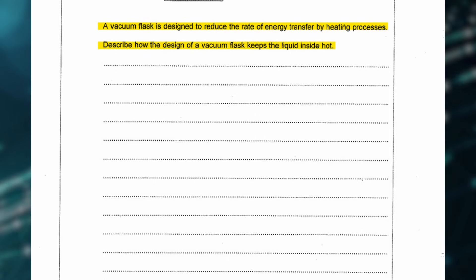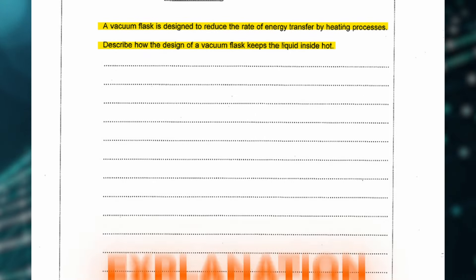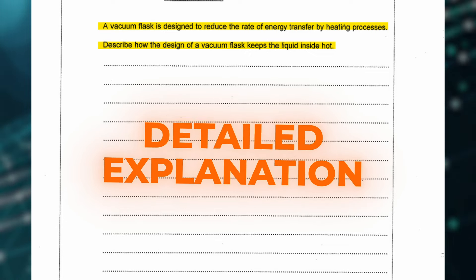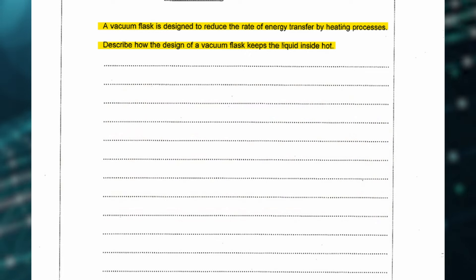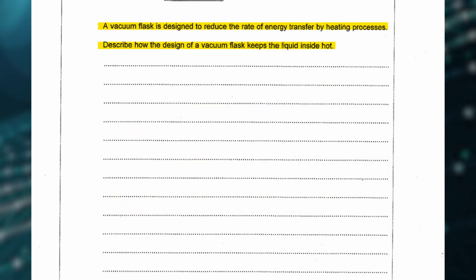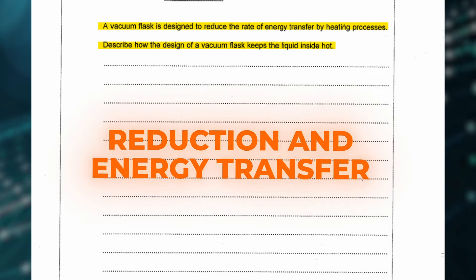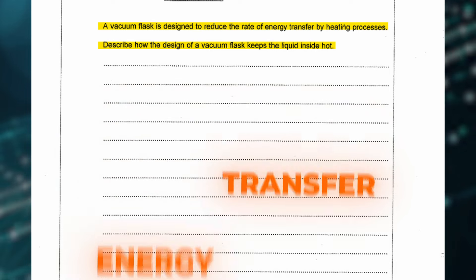To achieve 5 to 6 marks for this question, you need a detailed explanation of at least 2 features, or a simple statement relating reduction in energy transfer to all 4 features.